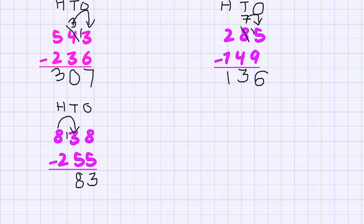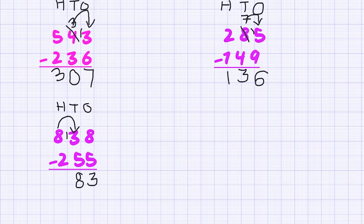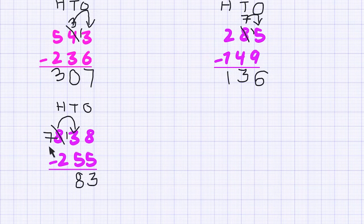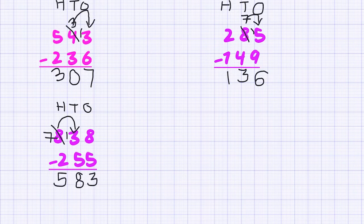13 subtract 5 is equal to 8. But look at the hundreds — our hundreds friend gave us a hundred, so we don't have 800 anymore, we only have 700. What is 7 minus 2? That is 5. So we have 583 as our answer.